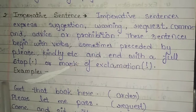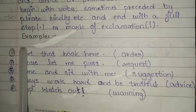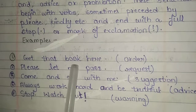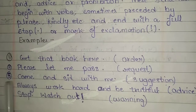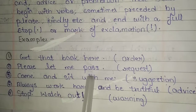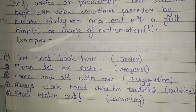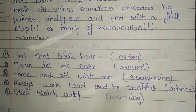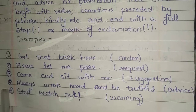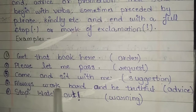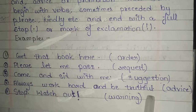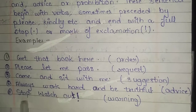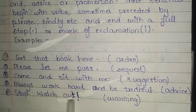Come to the examples. Number 1: 'Get that book here.' — Order. Number 2: 'Please let me pass.' — Request. Number 3: 'Come and sit with me.' — Suggestion. Number 4: 'Always work hard and be truthful.' — Advice. Number 5: 'Stop! Watch out!' — Warning.